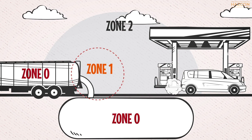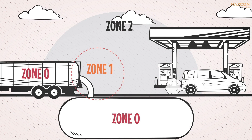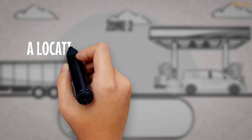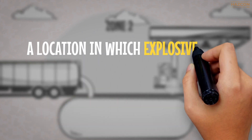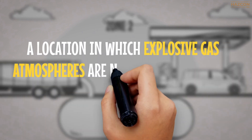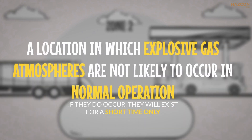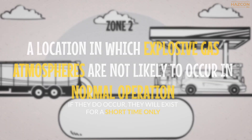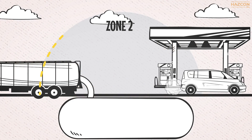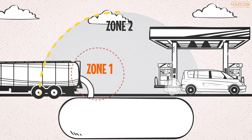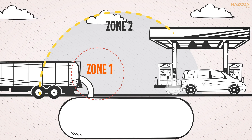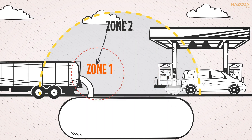In this animation, our focus is on the Zone 2 classified areas. Zone 2 is a location in which explosive gas atmospheres are not likely to occur in normal operation and, if they do occur, they will exist for a short time only. Zone 2 includes the area adjacent to a Zone 1 location, from which explosive gas atmospheres could be communicated.